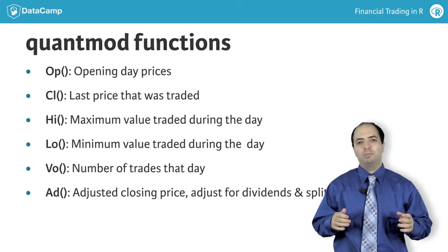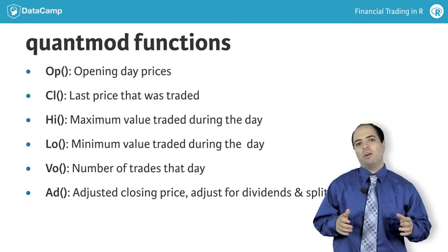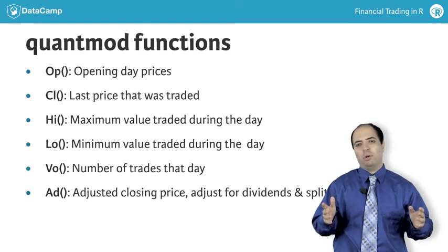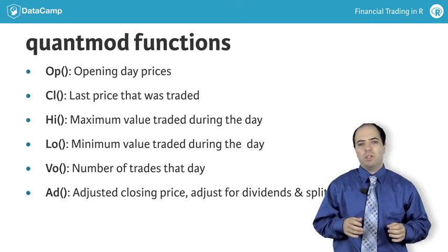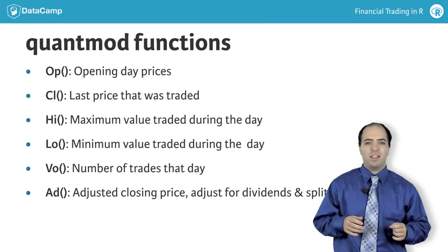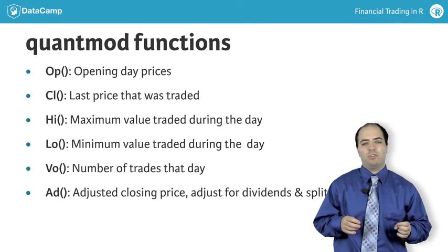Dividends are a regular cash payout to the holder of the asset that is not reflected in the raw prices, and splits are when the price of an asset gets cut in half, but the number of shares are increased by 2, for instance.